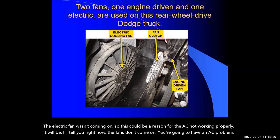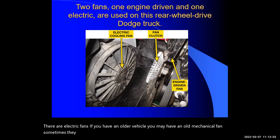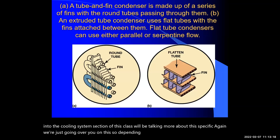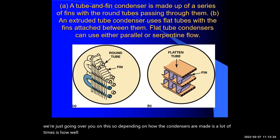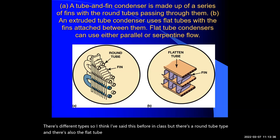There are electric fans, and if you have an older vehicle you may have a mechanical fan. Sometimes they're stacked — it'll have an electric fan and a clutch fan on top of it. When we get into the cooling system section of class, we'll talk more about that. Depending on how the condensers are made is a lot of times how well they cool. There are different styles and types — there's a round tube type and a flat tube type. It's just the way the manufacturer puts it together, and it's about transferring heat.